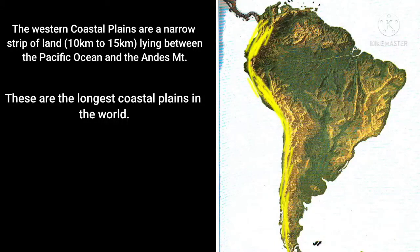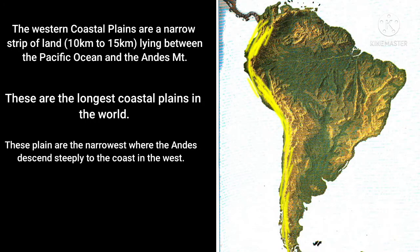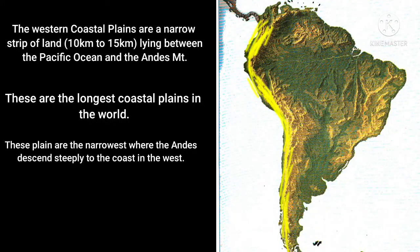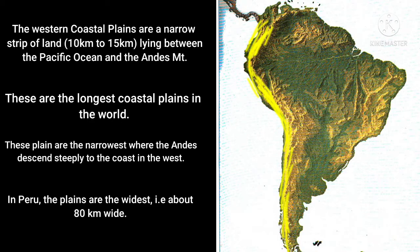Western coastal plains are a narrow strip of land lying between the Pacific Ocean and the Andes mountains. The extent of this coastal plain is 10 kilometers to 15 kilometers, lying between the Pacific Ocean and the Andes mountain system. These are the longest coastal plains in the world, and they are narrowest where the Andes descend steeply to the coast in the west.